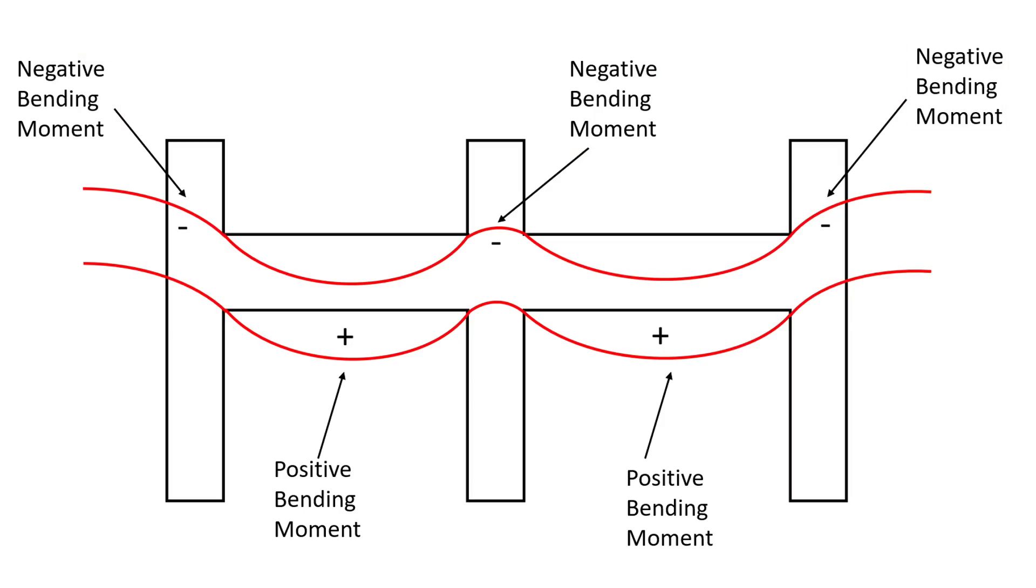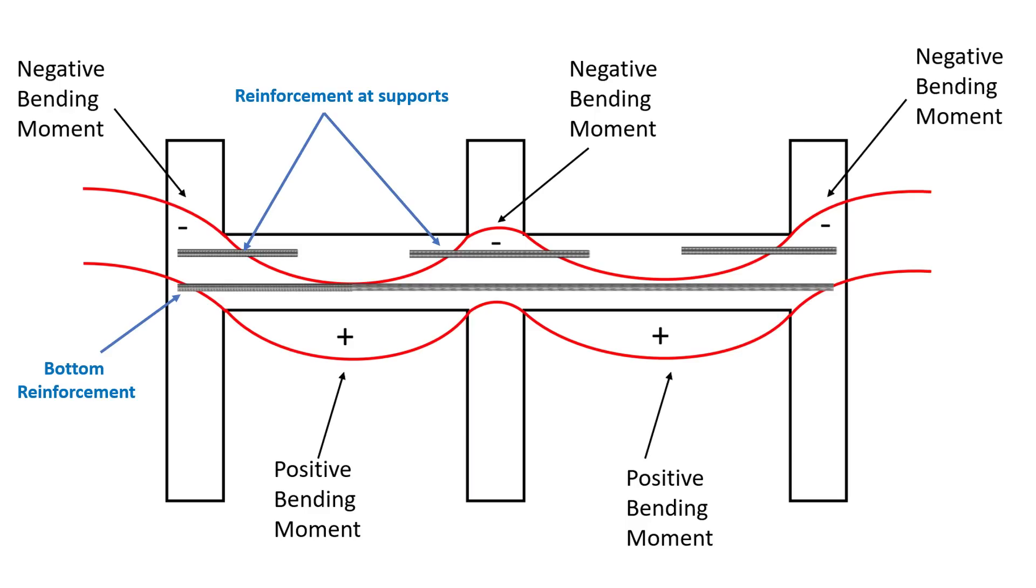To counter the sagging of beam at the mid-span, we provide reinforcement at the bottom of the beam to withstand the tensile stress. Conversely, to counter the negative moments at the supports, we place reinforcement bars at the top. However, rather than installing separate bars, we utilize bent up bars to resist hogging at the supports.